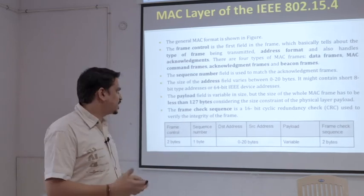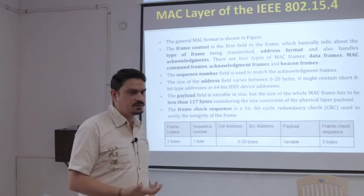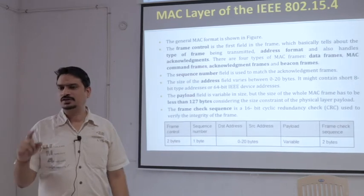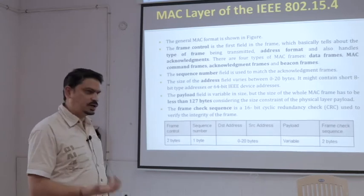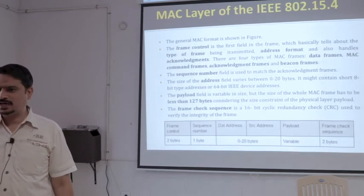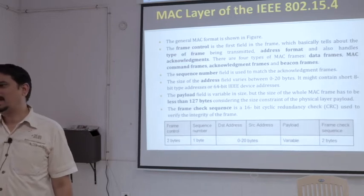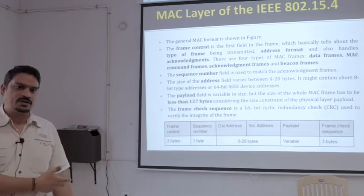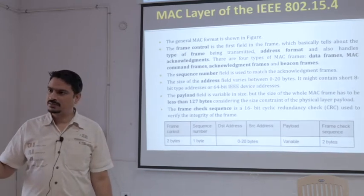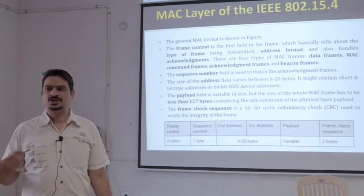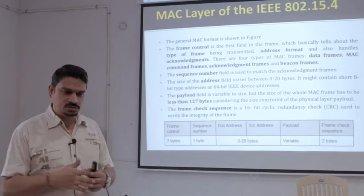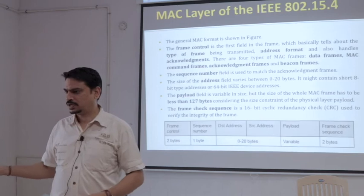So there are four frame types: data frame, MAC command frame (also called control packets or control frames), acknowledgement frame, and beacon frame. Two bytes is enough to tell which category a frame belongs to, since we have four categories. Actually, one byte would also be enough since we can use bit combinations like 00, 01, 10, 11 for four categories. However, two bytes have been reserved because over time many enhancements and research developments may add more frame types in the future.